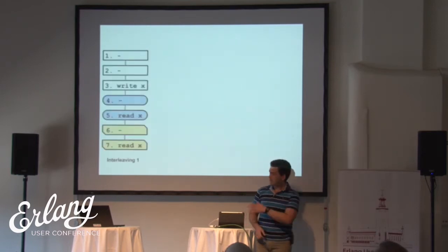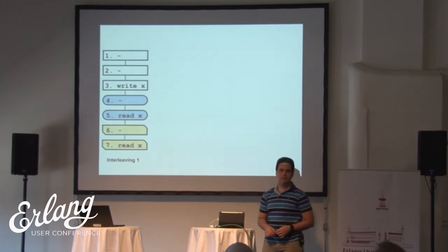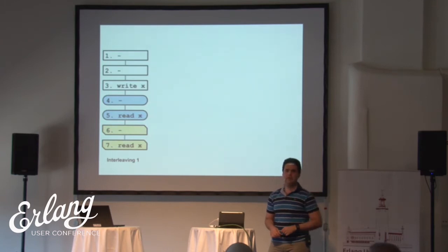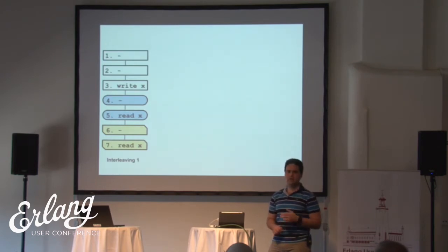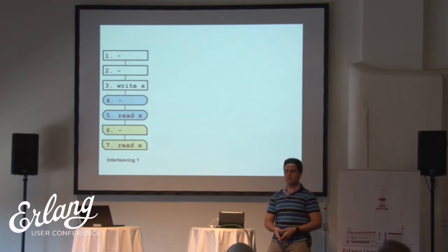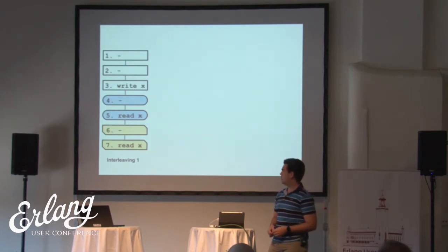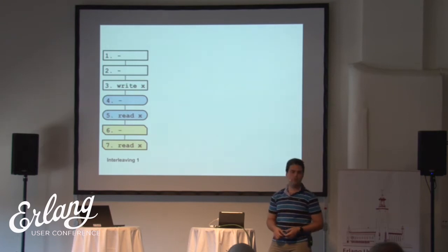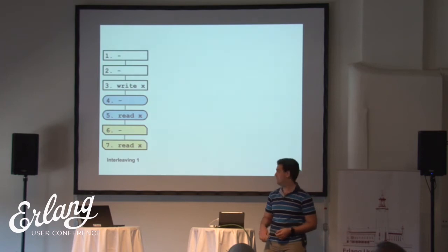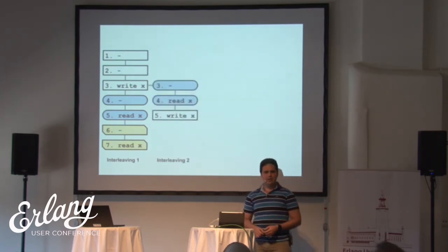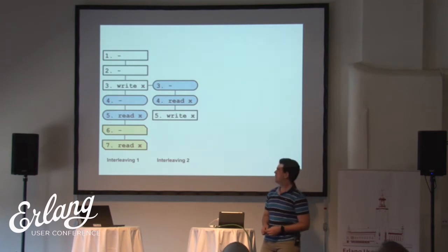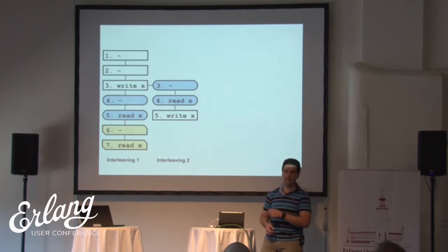How does this happen? This is the first interleaving of three processes: the white, the blue, and the yellow. I have wiped out some instructions that are not relevant for the races in this program, and left one write operation and two read operations. So if this is the first interleaving, a tool that does systematic testing using dynamic partial order reduction will first detect that there is a race between the read from the blue process at step five and the write from the white process at step three. So it will schedule another interleaving that starts so that it does the read from the blue process at step four, and then the write happens.